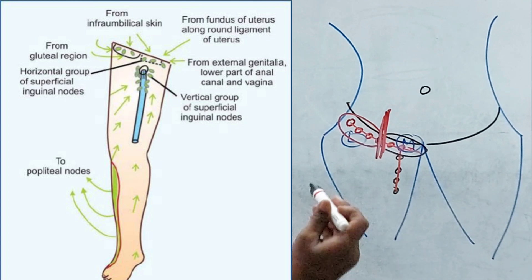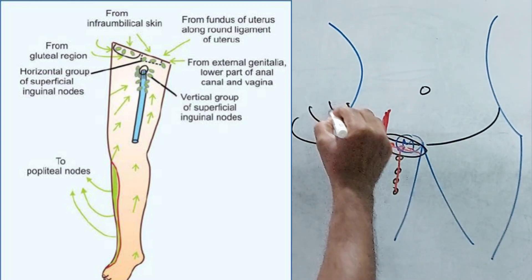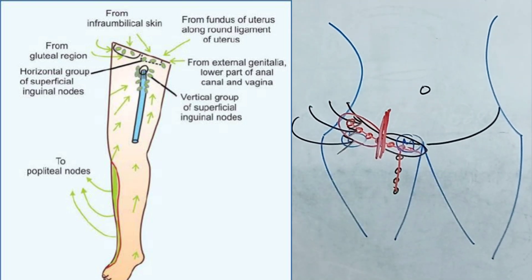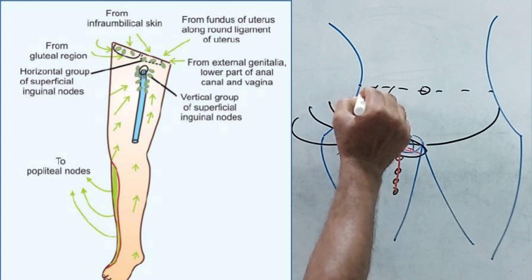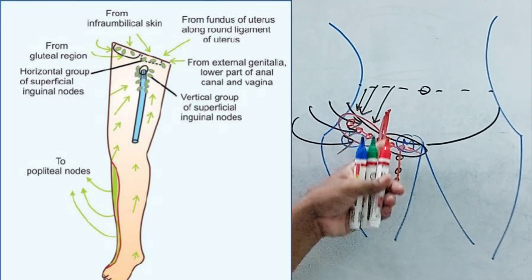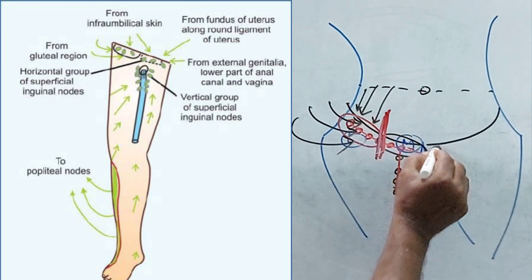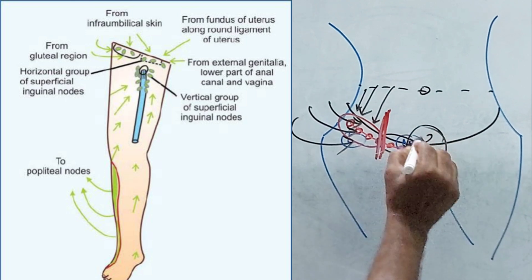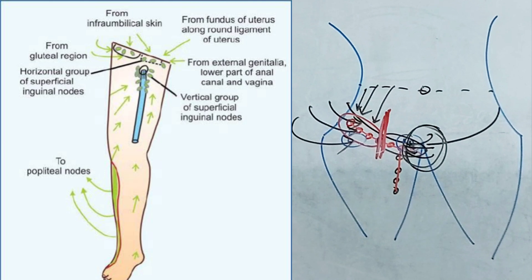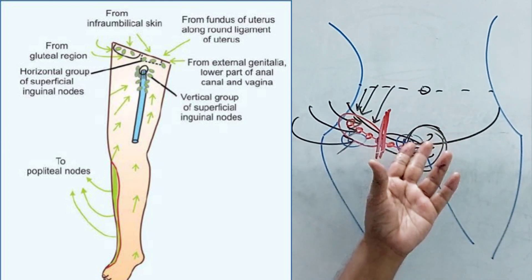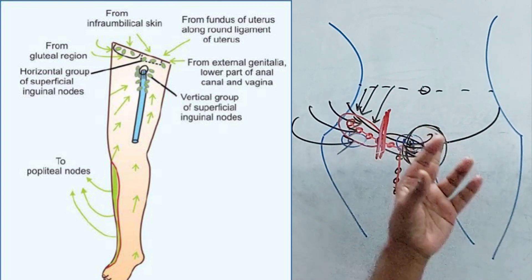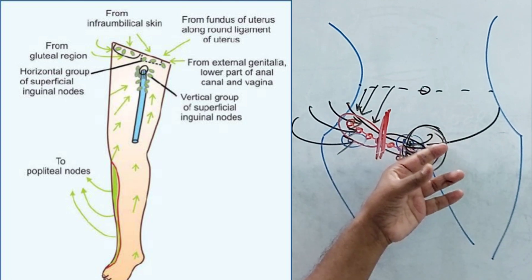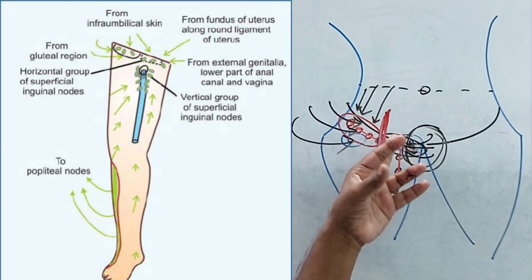The lateral group receives lymphatics from the back side, that is from the gluteal region, and also lymphatics from the lower part of the anterior abdominal wall below the umbilicus — even at the level of the umbilicus. The medial group receives lymphatics from the region of the genitalia — in both males and females, the external genitalia, excluding the testes or ovary — and this region is drained by the medial group of the superficial horizontal lymph nodes.